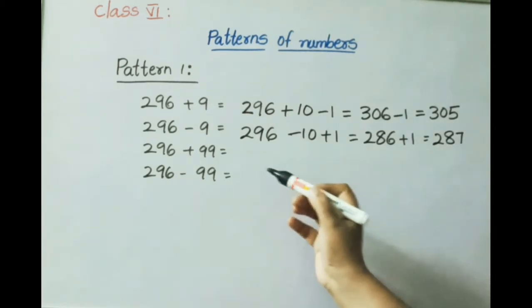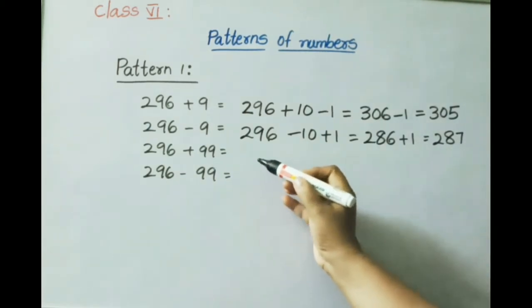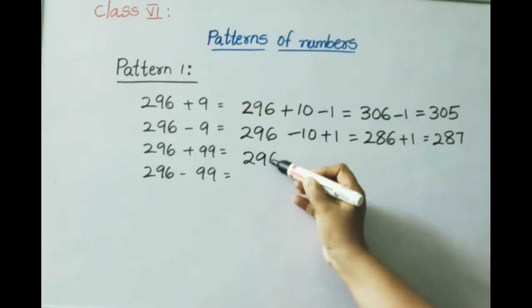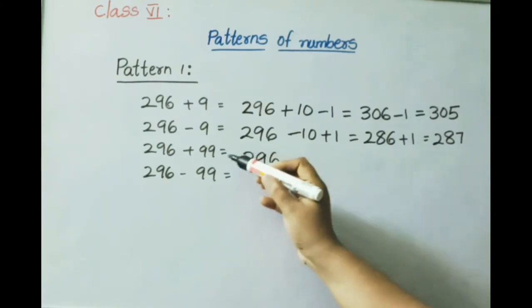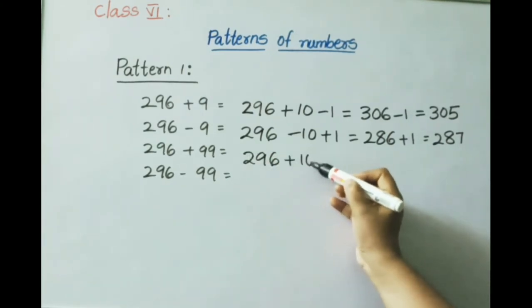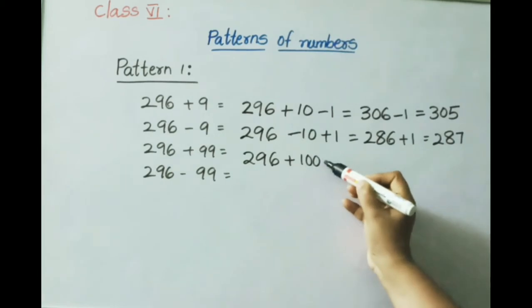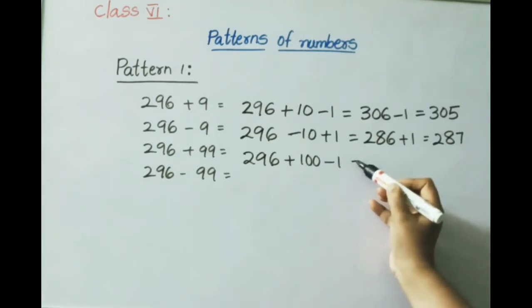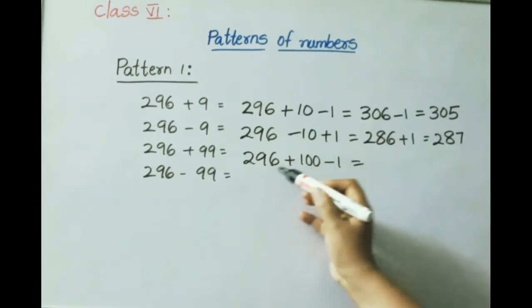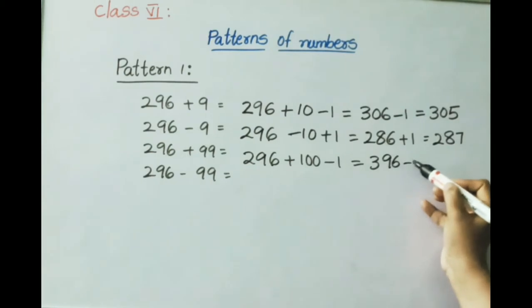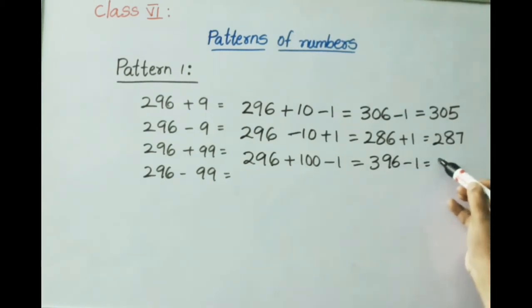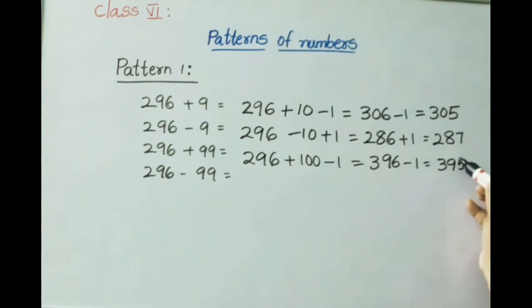Next: 296 plus 99. We write 99 as 100 minus 1. So 296 plus 100 equals 396, minus 1 gives 395. The answer is 395.